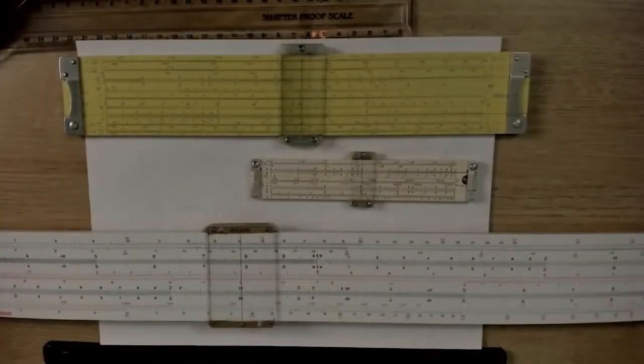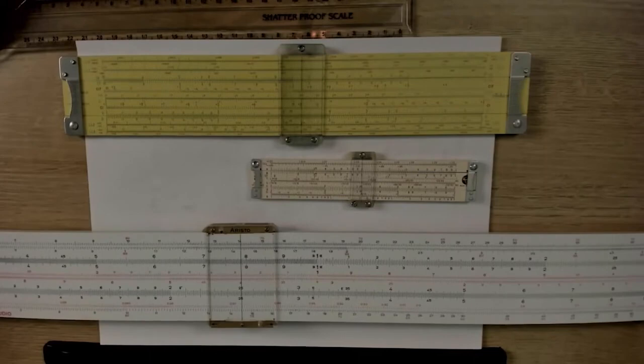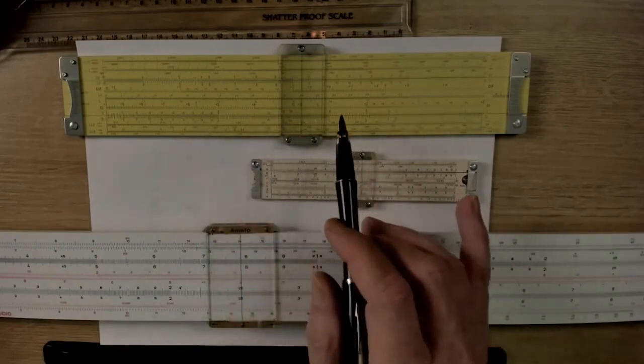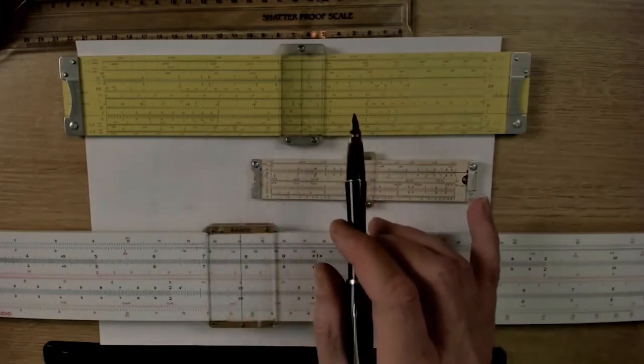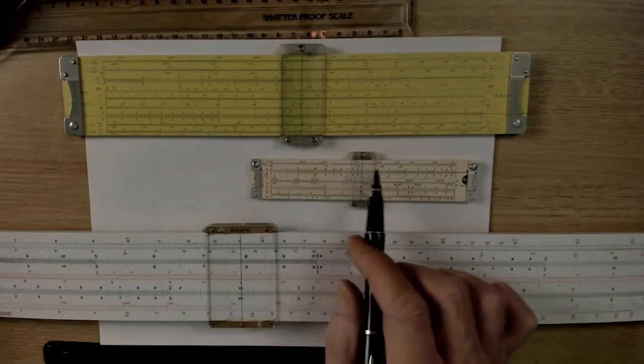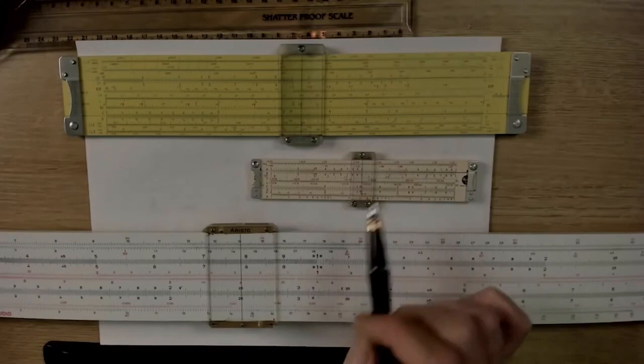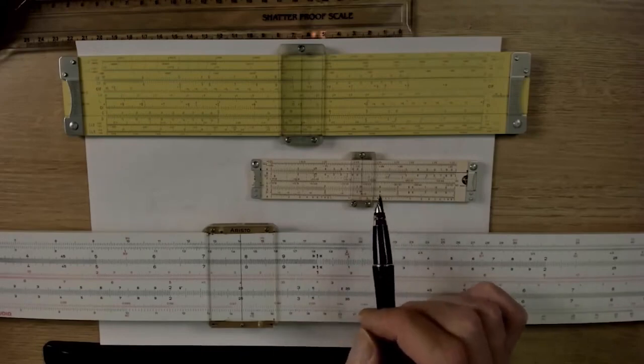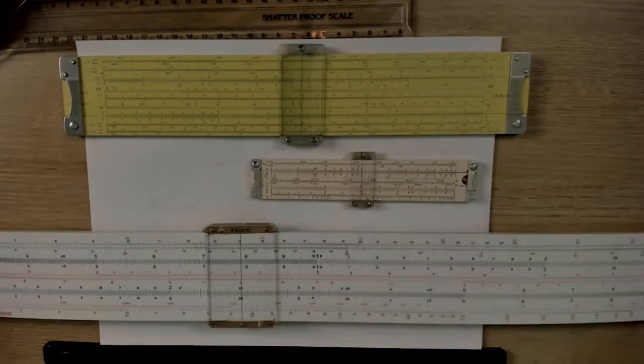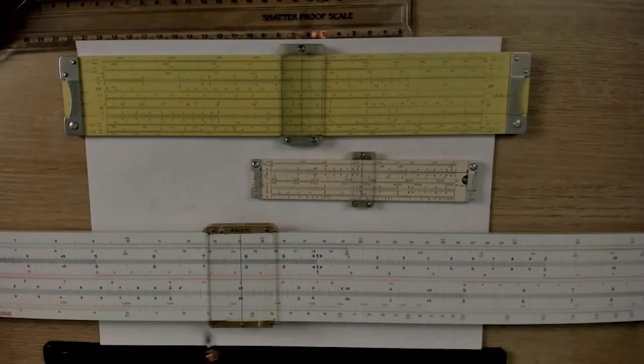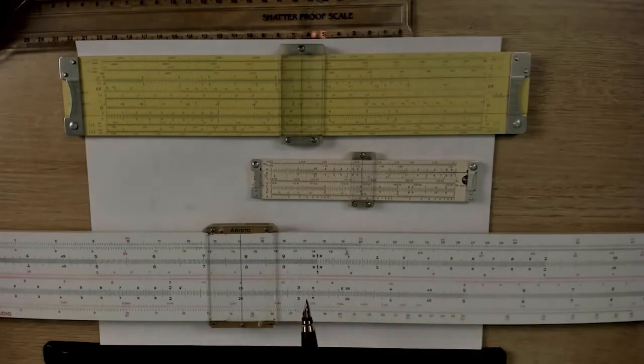Now, the accuracy of a slide rule is given in something called significant digits. A standard slide rule is 10 inches long, and it is good to about 3 significant digits. For quick calculations on the fly, we can use a pocket slide rule, and that's 5 to 6 inches long, and it's good to 2 to 3 significant digits. If you need a little bit more accuracy, you use a big 20-inch monster like this one. This is an Aristo Studio 1068, and it is good to 3 to 4 significant digits.